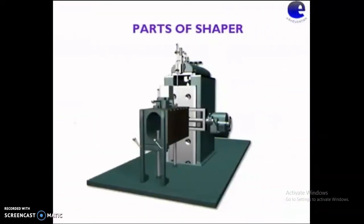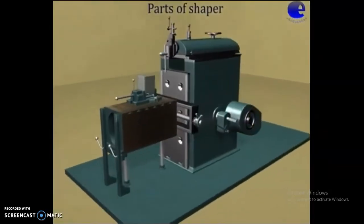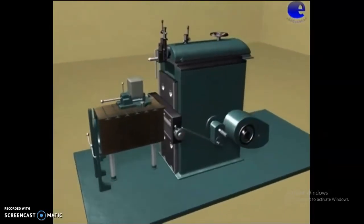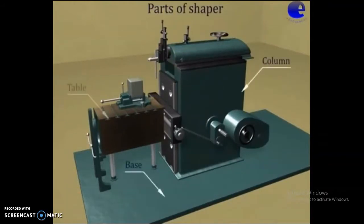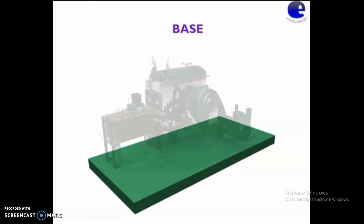Now we will discuss about the parts of the shaper. The main parts of the shaper are: base, column, table, vise, tool head, RAM, and cross rail.